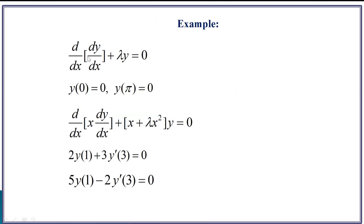Let us see some examples. In the first example, P(x) is 1, Q(x) is 0, R(x) is 1, and lambda is the parameter, with boundary conditions defined on the closed interval [0, π]. This is a mixed boundary condition. In the second equation, this is your P(x), this is your Q(x), and x² is your R(x). All these equations are basically self-adjoint equations which can be found under Sturm theory.